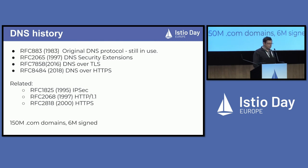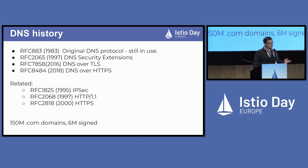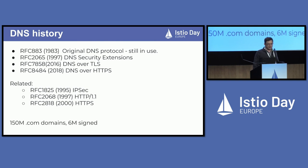DNS is a very, very old protocol — first RFC published in '83. It's one of the ossified protocols, meaning that it's still in use today exactly as it was, more or less. Very difficult to change. A lot of people have used and abused DNS in many ways. Like all the old protocols, security was not part of the original design. It was retrofitted later as DNS security extensions. And far later, thanks to privacy concerns and browsers in 2016-18, DNS over TLS and DNS over HTTPS were introduced.